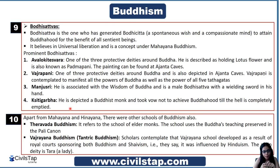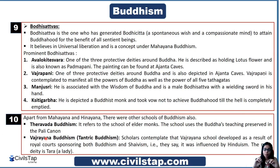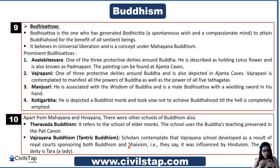Among other schools of Buddhism, Theravada Buddhism refers to the school of elder monks and uses Buddha's teachings preserved in the Pali canon. Vajrayana Buddhism, also known as Tantric Buddhism, developed as a result of royal court sponsorship of both Buddhism and Shaivism. Because Shaivism is part of Hinduism, Vajrayana Buddhism has strong Hindu influence. Its main deity is Tara. So if asked which school has Hindu influence, the answer is Vajrayana Buddhism.